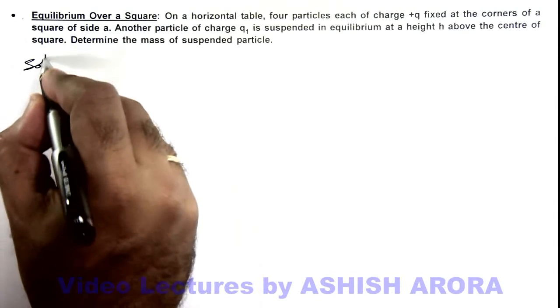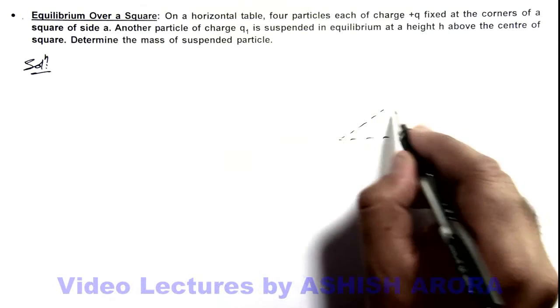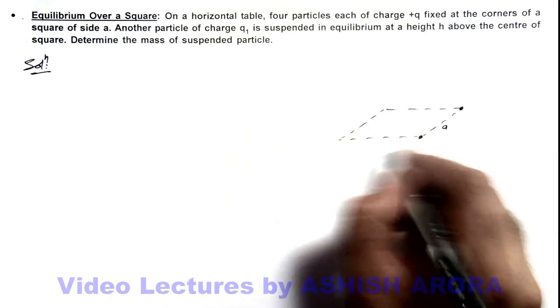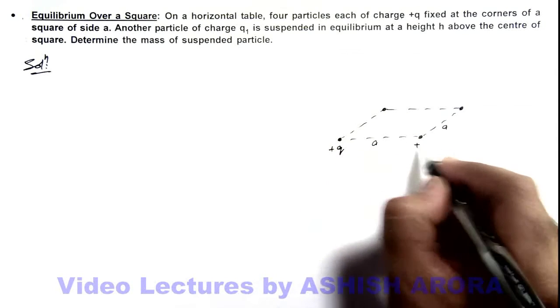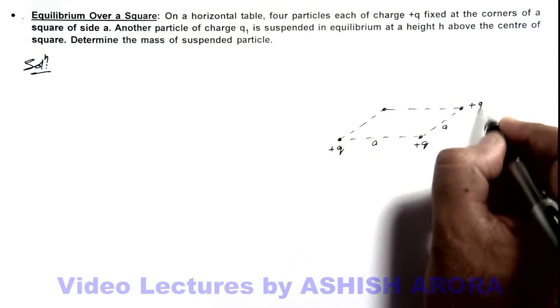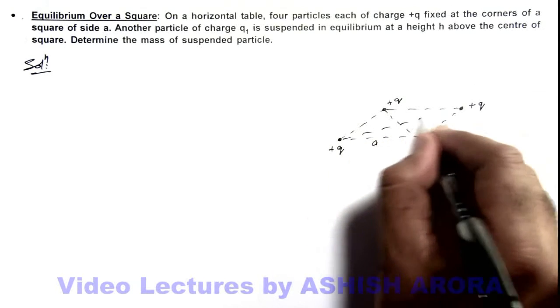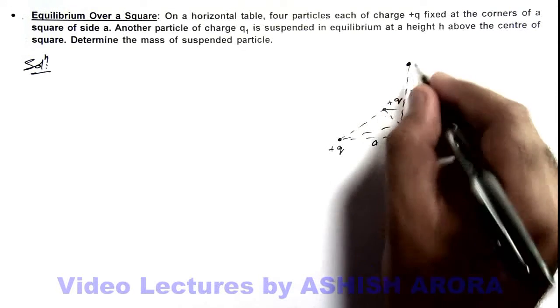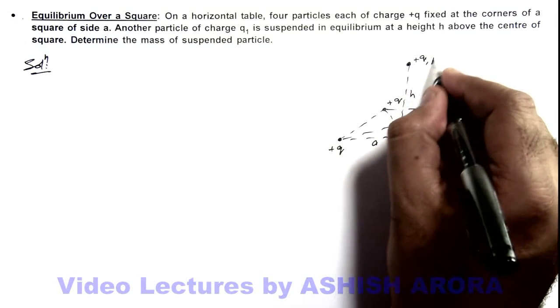Here in solution if we draw the situation you can see on a horizontal table there is a square which is of side a, and at the vertices of the square, four charges plus q each are placed or fixed. And vertically above the center of this square, say at a height h, charge plus q1 is suspended which we consider of mass m.